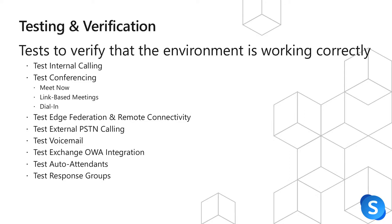After we test internal calling, we need to test the conferencing services working. An easy way to test this is by opening the Skype for Business client and clicking Meet Now, or by clicking Meet Now on one of your desk-based phones. Additionally, we need to test that link-based meetings are still joinable. If you've had previously scheduled meetings for a specific user, click on one of those links and verify that you can join the meeting.